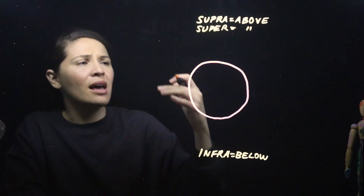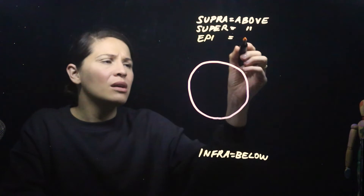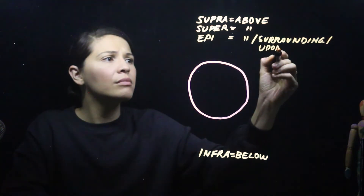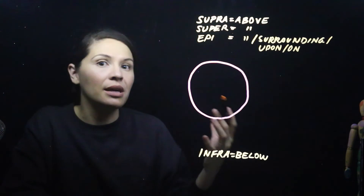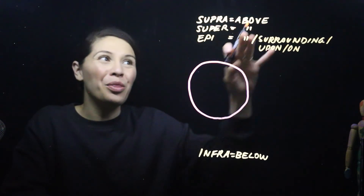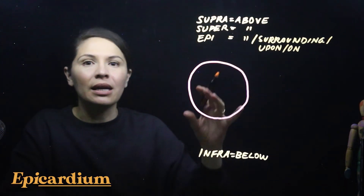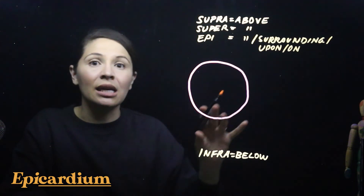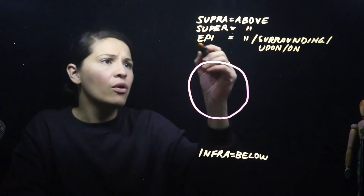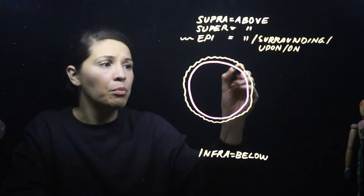Another prefix that can mean above — but also has a double meaning — is epi. Epi means above, but it can also mean surrounding, upon, or on. An example is epidermis: dermal is associated with skin, so the epidermis is that outermost layer on top. Another example showing how epi means surrounding is epicardium — the outermost layer of the heart, where epi means surrounding the heart.